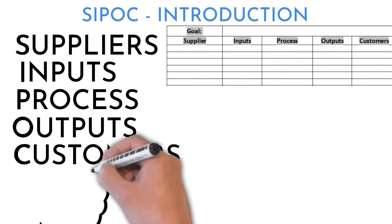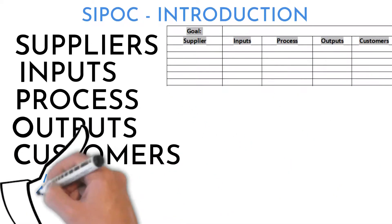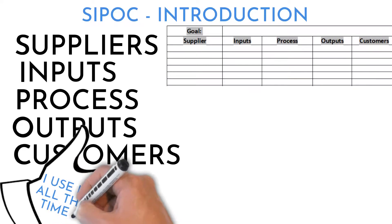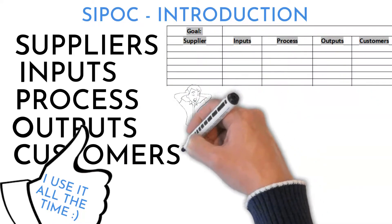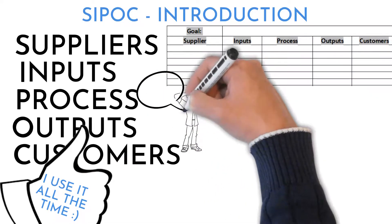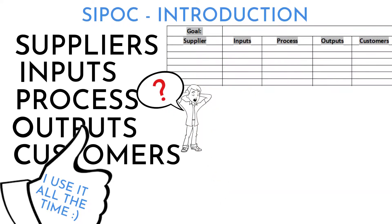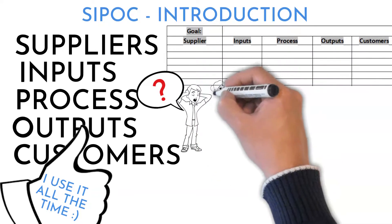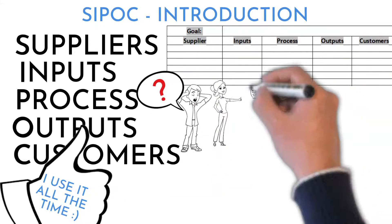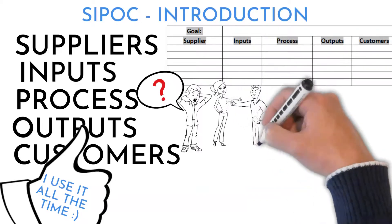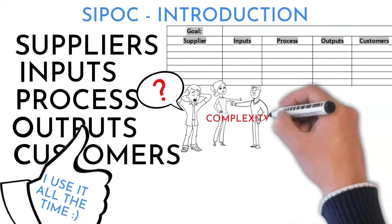SIPOC is one of my favorite tools — I use it in every single Six Sigma project I lead. It's great for several reasons: it easily describes the current challenging situation, and gives the project leader and team a high-level process understanding, helping with complex process comprehension.